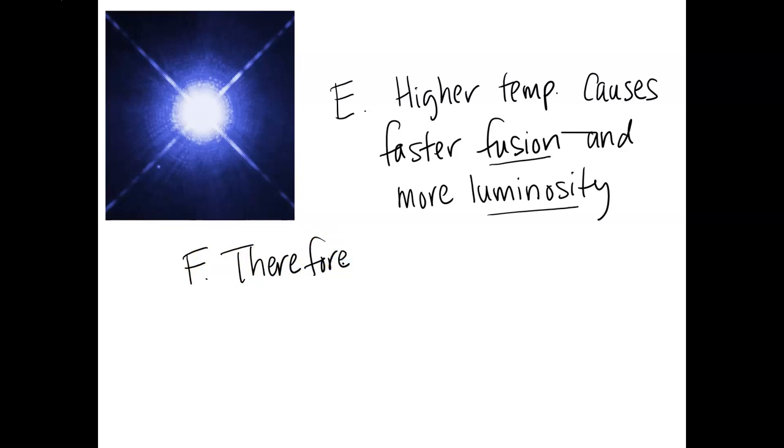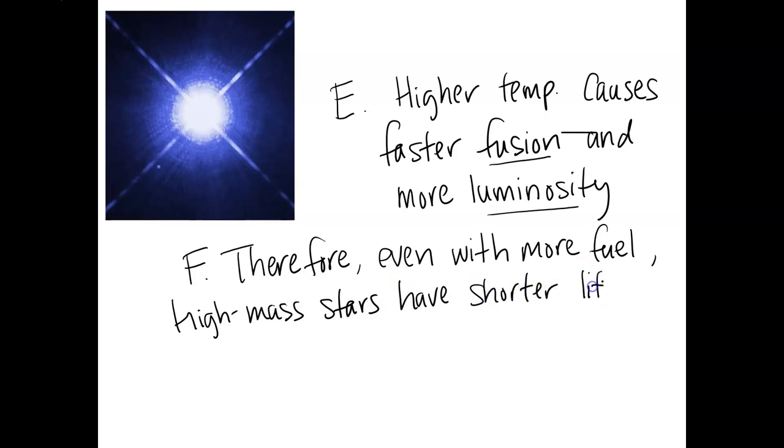So we've come through this cycle and I'm going to put it all together here with a therefore statement. Therefore, even though these high mass stars have more fuel, even with more hydrogen to begin with, the high mass stars have shorter lifetimes and they evolve more quickly. And when I mean lifetime, I'm going to say overall lifetimes, but more specifically on the main sequence before they begin their death cycle. So they have shorter lifetimes on the main sequence when they're burning hydrogen before their fuel changes.